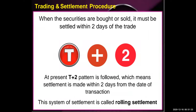When securities are bought and sold, it must be settled within two days of the trade. At present, the T+2 pattern is followed, which means the settlement is made within two days from the date of transaction. This system of settlement is called rolling settlement.